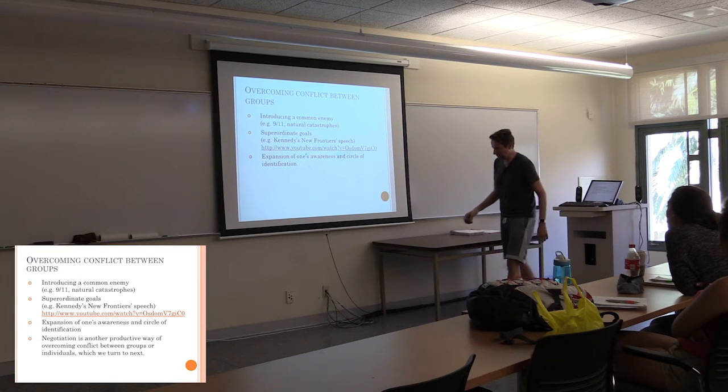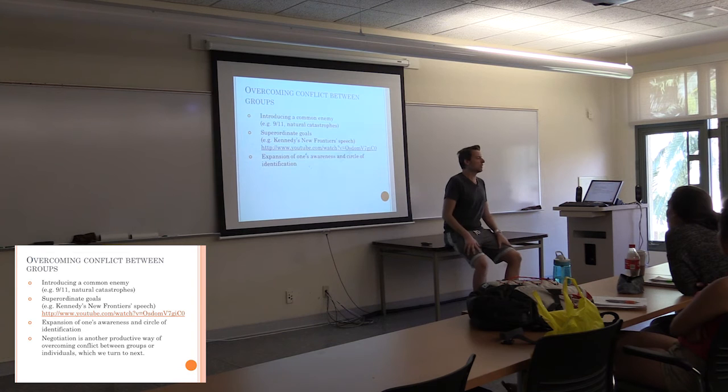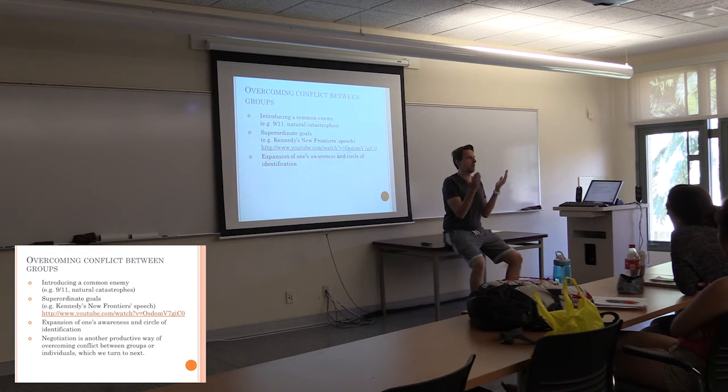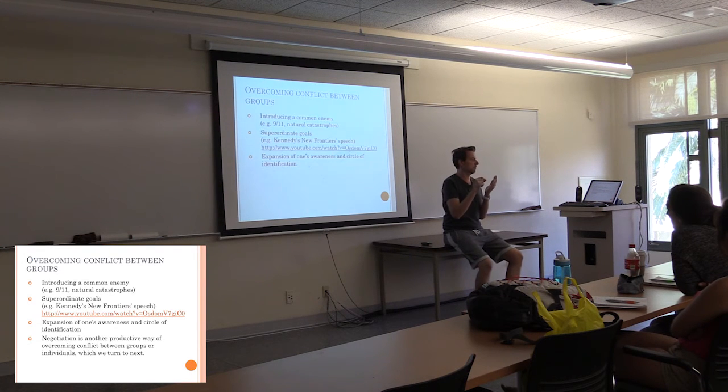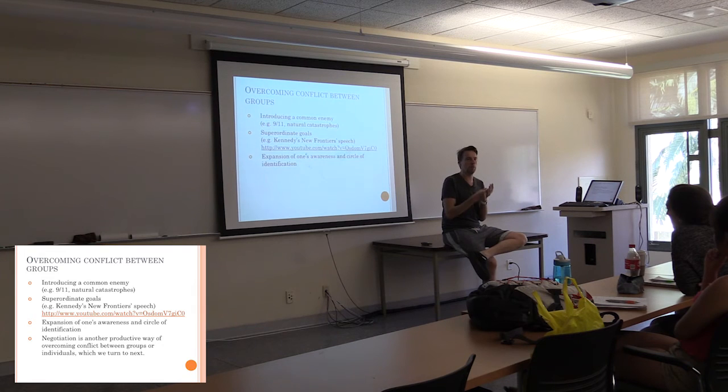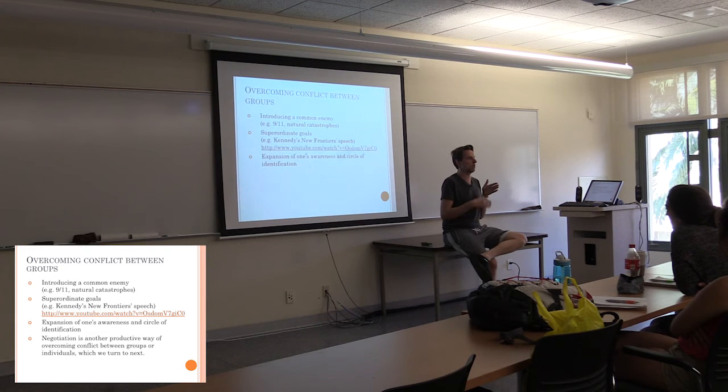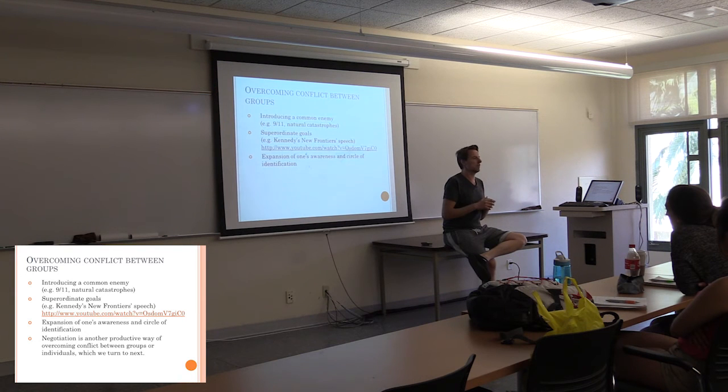There's an interesting exercise, maybe we'll try this in a t-group. There's an interesting exercise where you're given a set of blank cards and you write your identities. So you try to write as many identities as you can, whatever, race, gender, whatever comes to your mind. And then you're asked to give away which one is the least important. So give away one of your identities and then the next one, the next one, the next one. And that gives you a priority list of what identities are the most important and central to you. Then you give away the last card and then you're like, what are you now, once you've given that away.